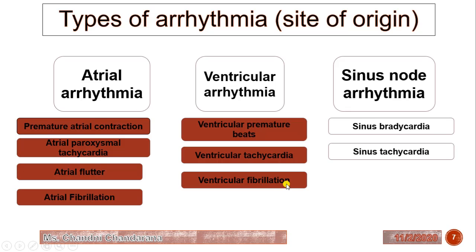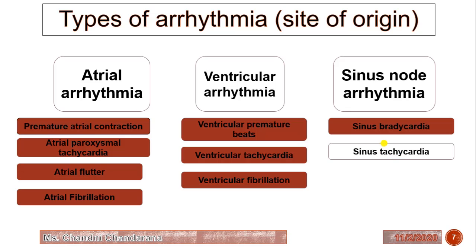The next is sinus node arrhythmia. The normal heartbeat is 60 to 100 beats per minute, and it is divided into two types originating from the pacemaker of the heart. First is sinus bradycardia, where the heartbeat is less than 60 beats per minute. Second is sinus tachycardia, where the heartbeat increases to more than 100 beats per minute. For tachycardia, we can give drugs to reduce conduction velocity and extend the duration of the cardiac action potential.